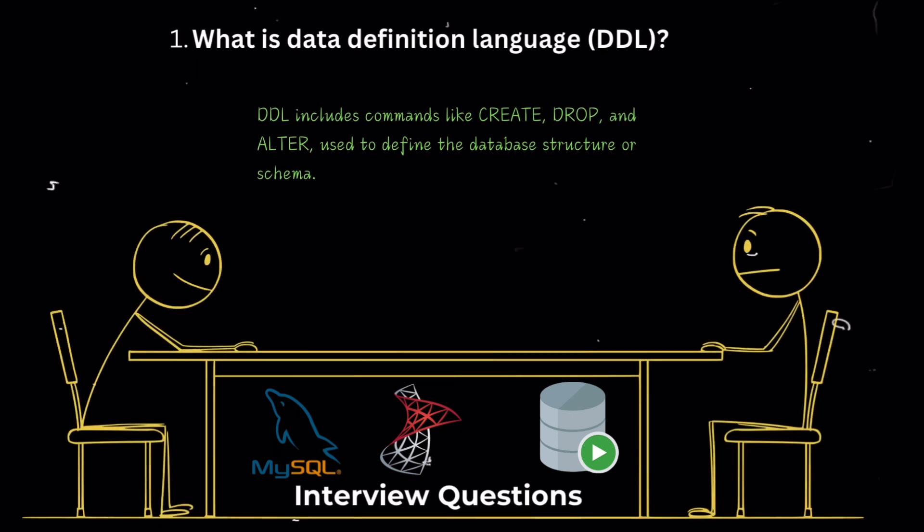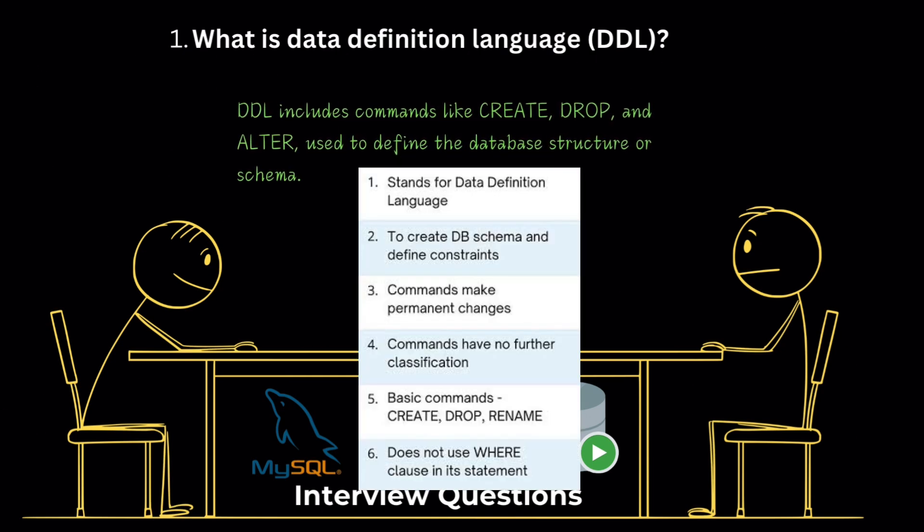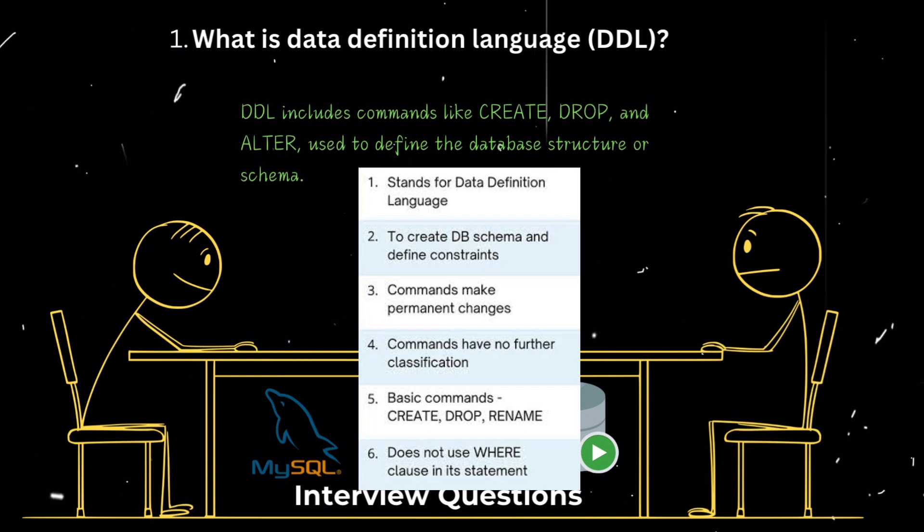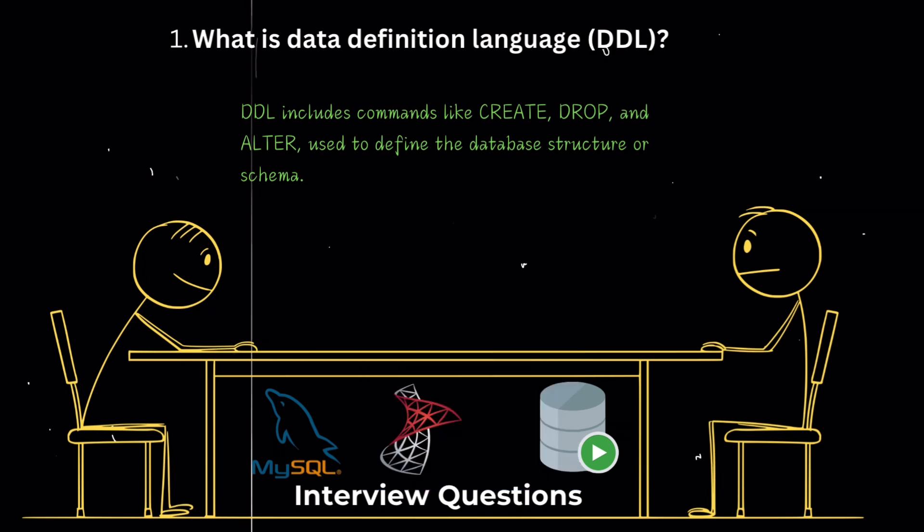What is data definition language, DDL? Data definition language, DDL, includes commands used to define the database structure or schema. DDL commands include create, drop, and ALTER. These commands help in creating new databases, tables, or altering existing database structures.